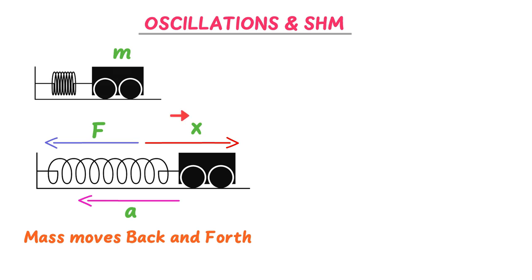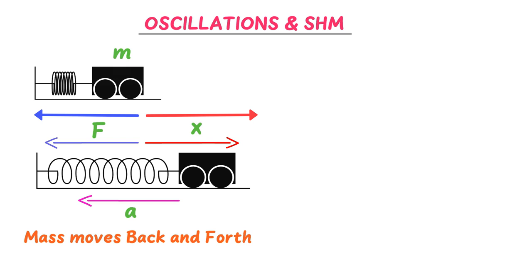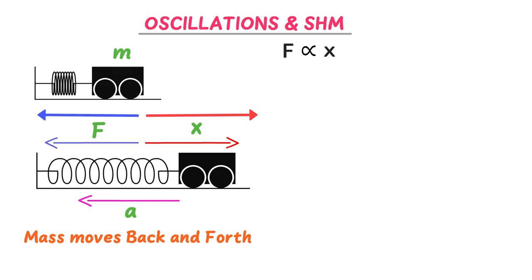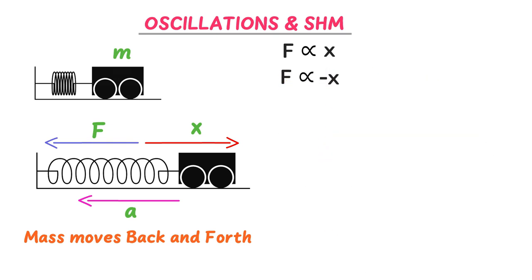Now listen carefully. If the displacement x of the mass is small, the restoring force F will also be small. If I increase the size of displacement x, the restoring force F will also increase. Therefore, F is directly proportional to x. Also, the direction of displacement and the direction of the restoring force are opposite, so we write F is directly proportional to negative x.